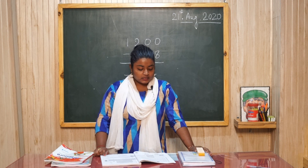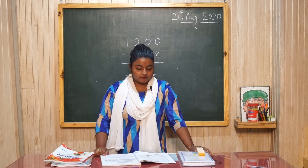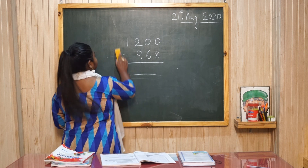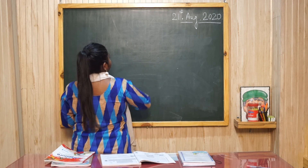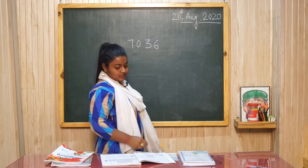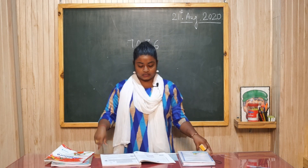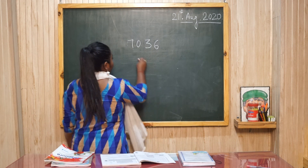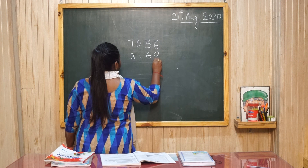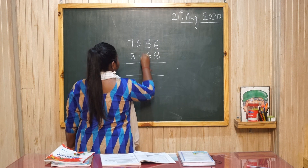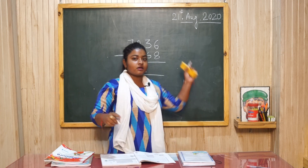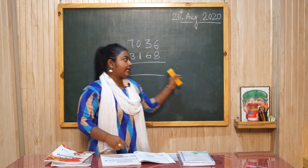Question number 9. The sum of two numbers is 7,036. 7,036 है sum of two numbers का. One number is 3,168. So you will deduct. The answer will be the sum of the other number.